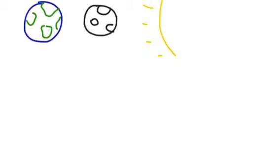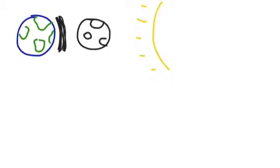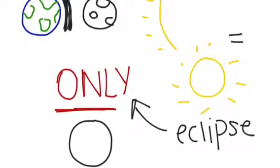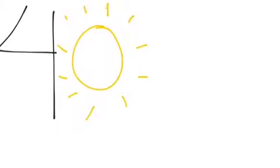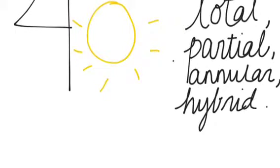A solar eclipse happens when the moon travels between the Earth and the sun, casting a shadow on the Earth, and can only occur during a new moon when the moon passes between Earth and the sun. There are four types of solar eclipses: the total, the partial, the annular, and the hybrid.